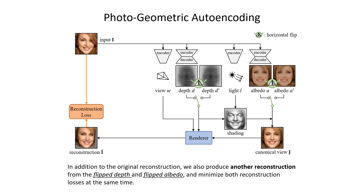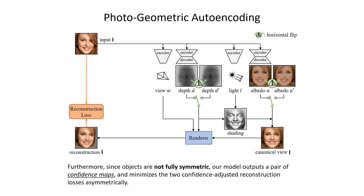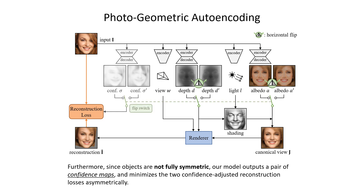We then minimize both reconstruction losses at the same time. However, individual objects are often not fully symmetric. Therefore, we augment our model to reason about symmetry probabilistically. Our model additionally outputs a pair of confidence maps and minimizes the two confidence-adjusted reconstruction losses asymmetrically. Note that in this way, asymmetries such as the hair are preserved.